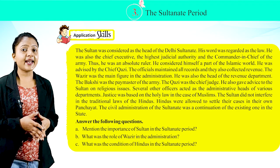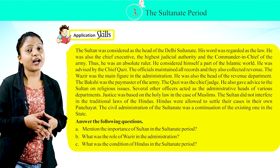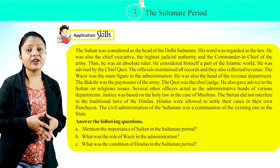The Sultan was considered the head of the Delhi Sultanate. His word was regarded as the law. He was also the chief executive, the highest judicial authority, and the commander-in-chief of the army. Thus, he was an absolute ruler. He considered himself a part of the Islamic world and was advised by the chief Qazi.